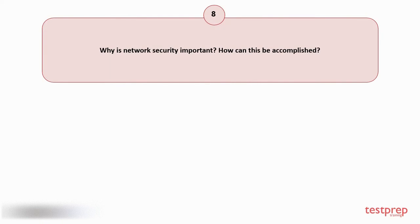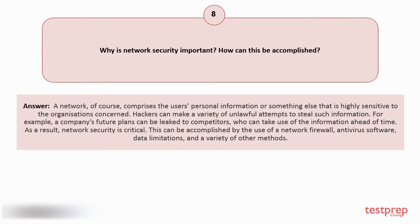Question number eight: Why is network security important and how can this be accomplished? Your answer is: A network comprises the user's personal information or something else that is highly sensitive to the organization concerned. Hackers can make a variety of unlawful attempts to steal such information — for example, a company's future plans can be leaked to competitors. This can be accomplished by the use of a network firewall, antivirus software, data limitations, and a variety of other methods.